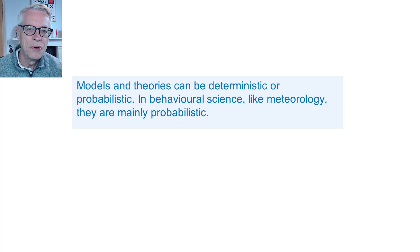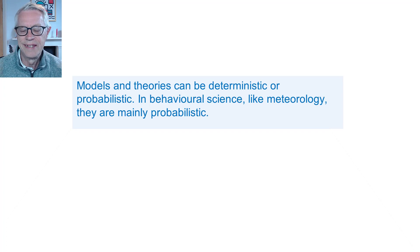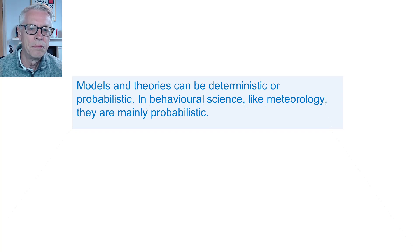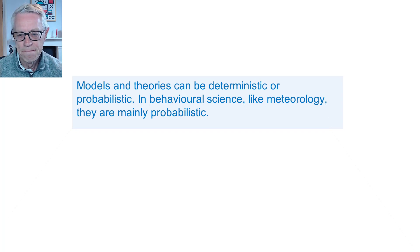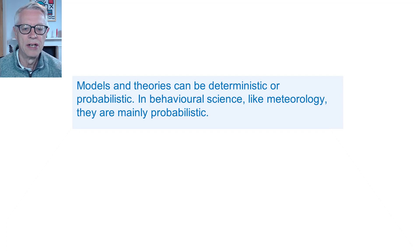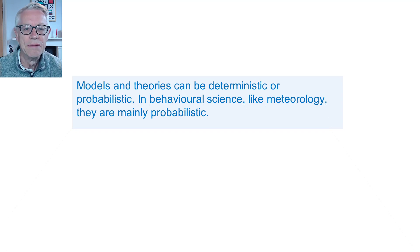Models and theories in science can be deterministic — in other words, they can say this will definitely happen, this value will definitely appear if we measure it — or they can be probabilistic, or stochastic, as it's sometimes called. In behavioural science, like many other sciences including meteorology, the models and theories are mainly probabilistic. That means that for every prediction we make, we should really be expressing a degree of confidence from low to high, or even almost certain in some cases, rather than talking in absolutes.